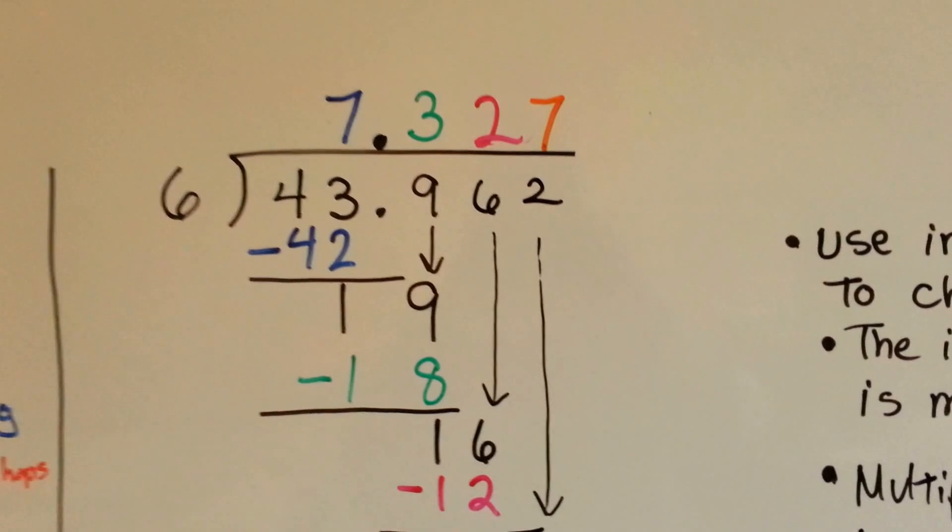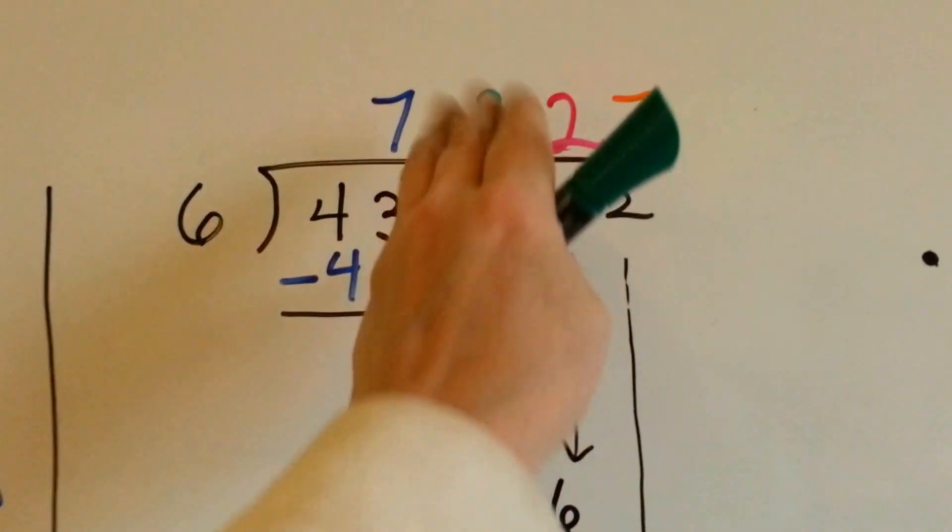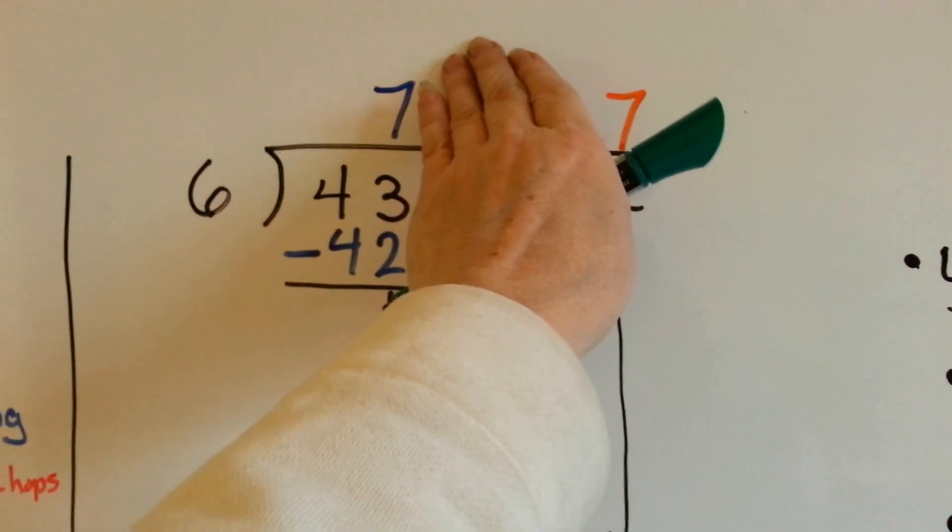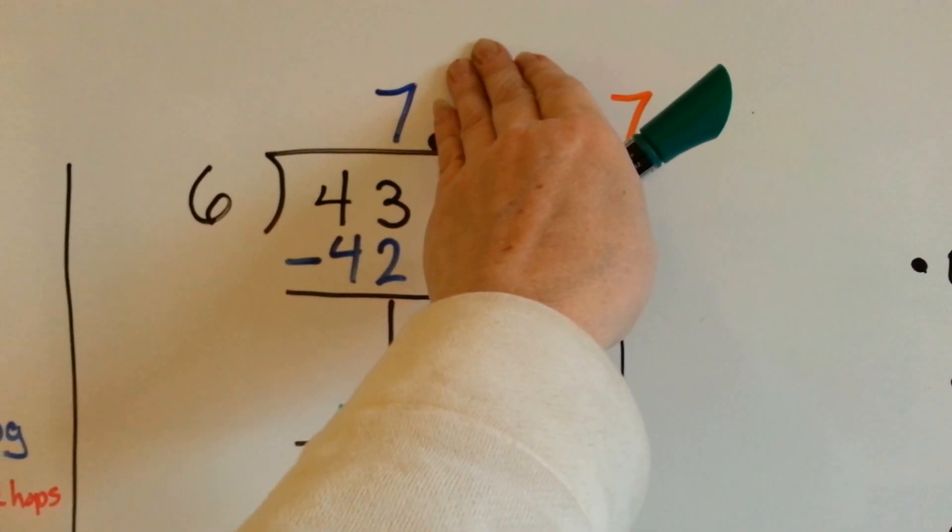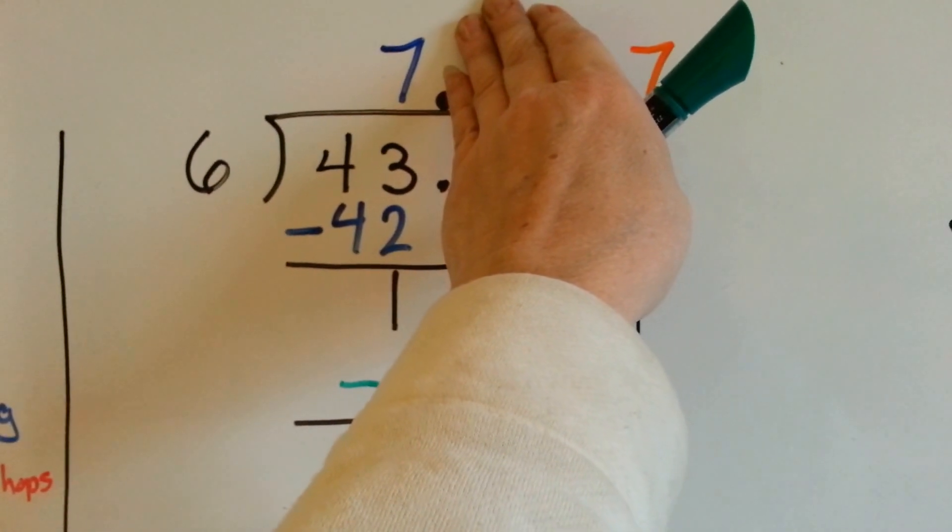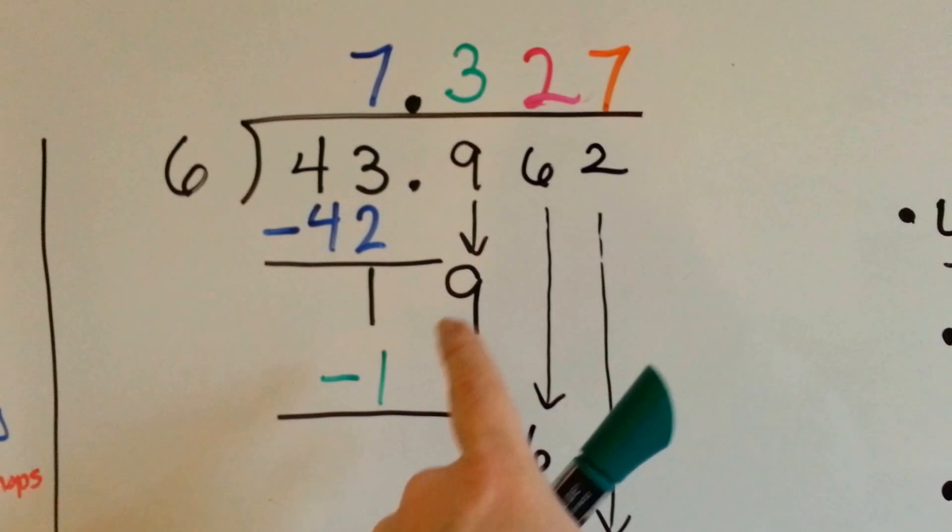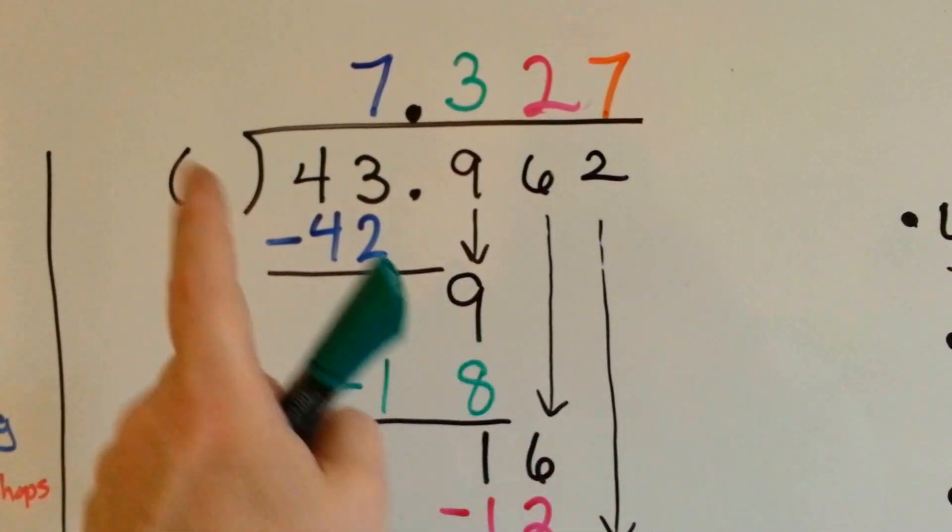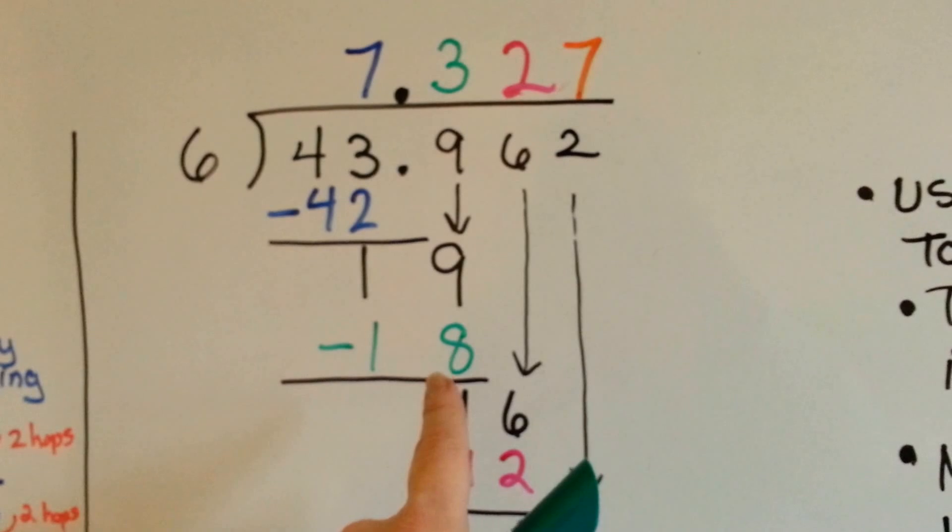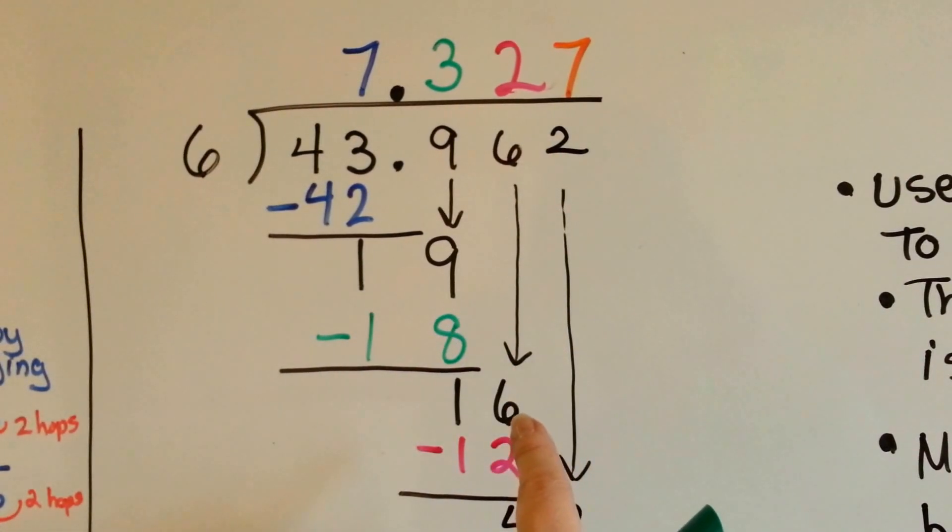What about for a bigger one? We ask ourselves if 6 can fit into 4. Of course not. That's way too small. But it can fit into 43, because 6 times 7 is 42. So we put our 42 down there and do our subtraction, and we get a 1. We can put our decimal point directly above. And now it's the 9's turn to come down. 6 goes into 19, 3 times, because 6 times 3 is 18. We do our subtraction. We get 1 left over.